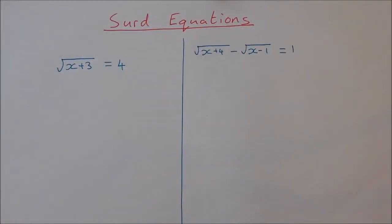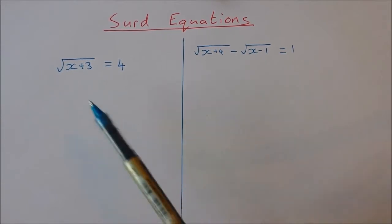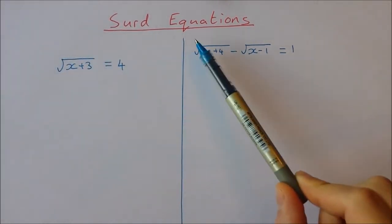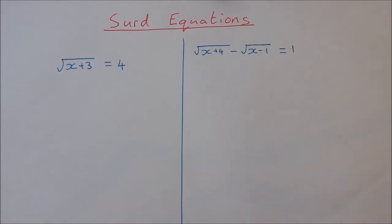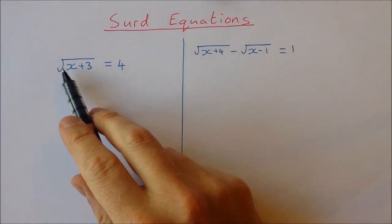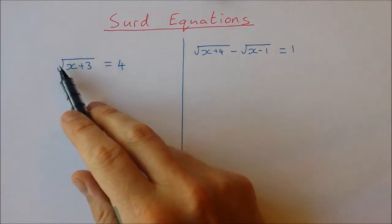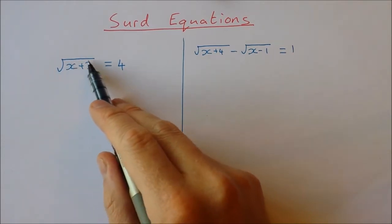In this video we're going to take a look at some radical equations that have square roots in them. We need to deal with these square roots before we can do anything else. The method we're going to use is to square them — if we square a square root, we get the expression underneath the square root sign on its own.